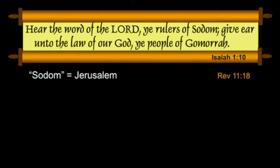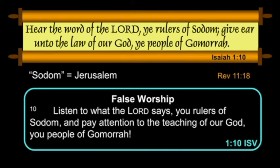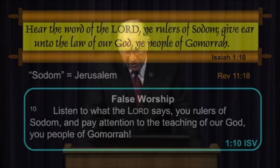We're going to see later in the book that they use Assyria and Babylon as metaphors for the enemies of God. That's what John picks up in Revelation as "mystery Babylon" — not the literal Babylon, but something idiomatic. The ISV treats verse 10: "Listen to what the Lord says, you rulers of Sodom. And pay attention to the teaching of our God, you people of Gomorrah." He's going to get into the whole idea of false worship — they're worshiping, but it's meaningless.